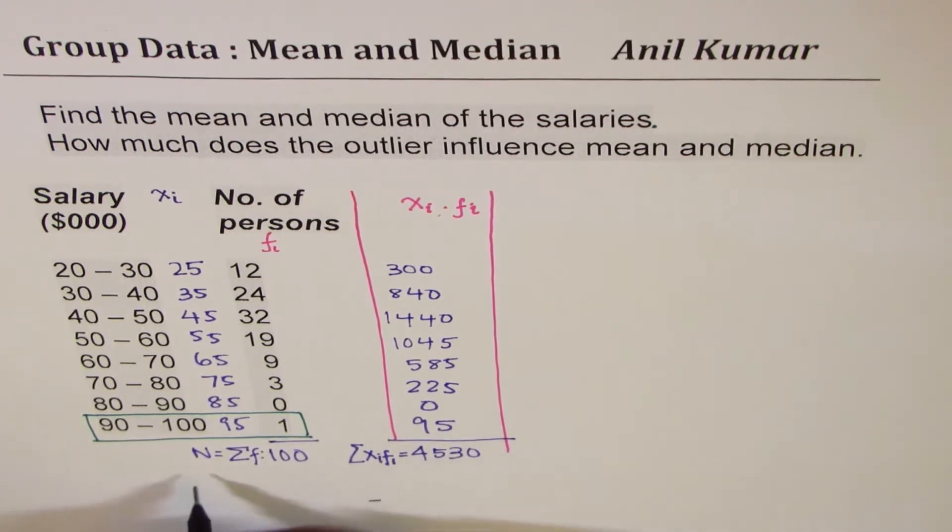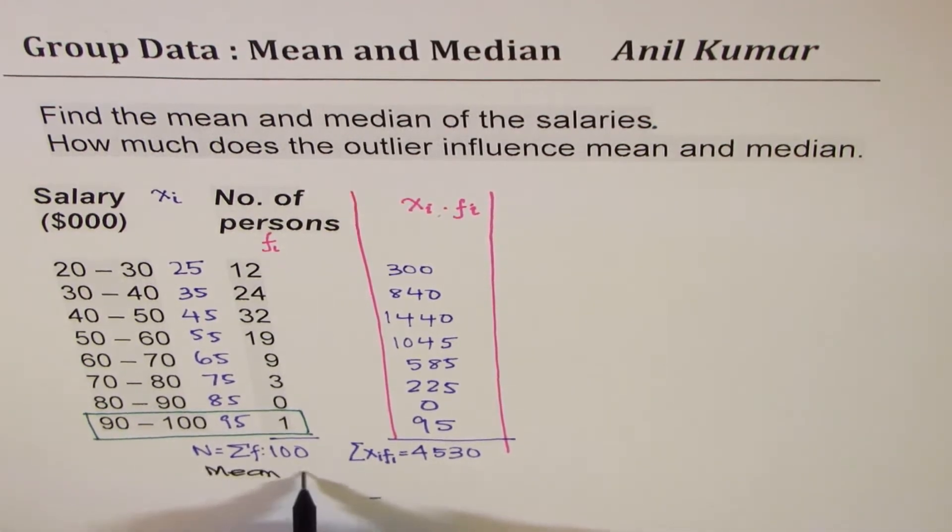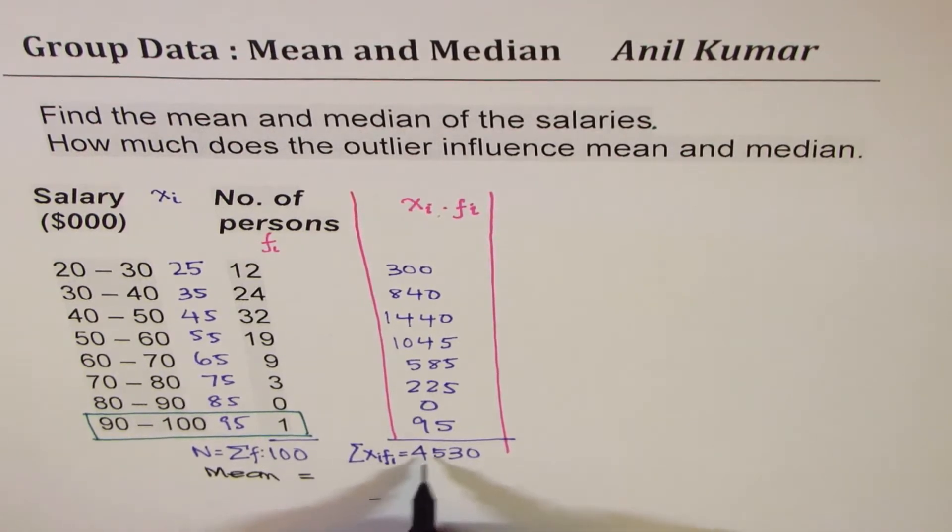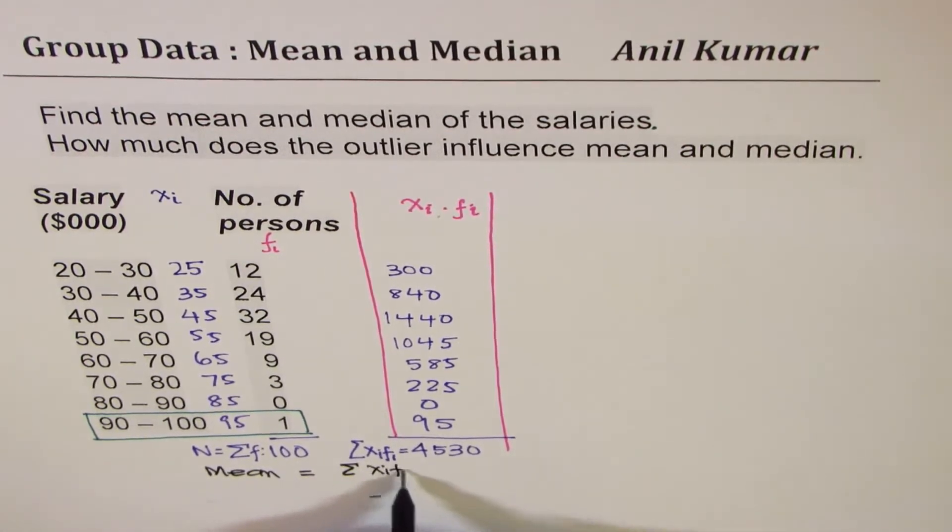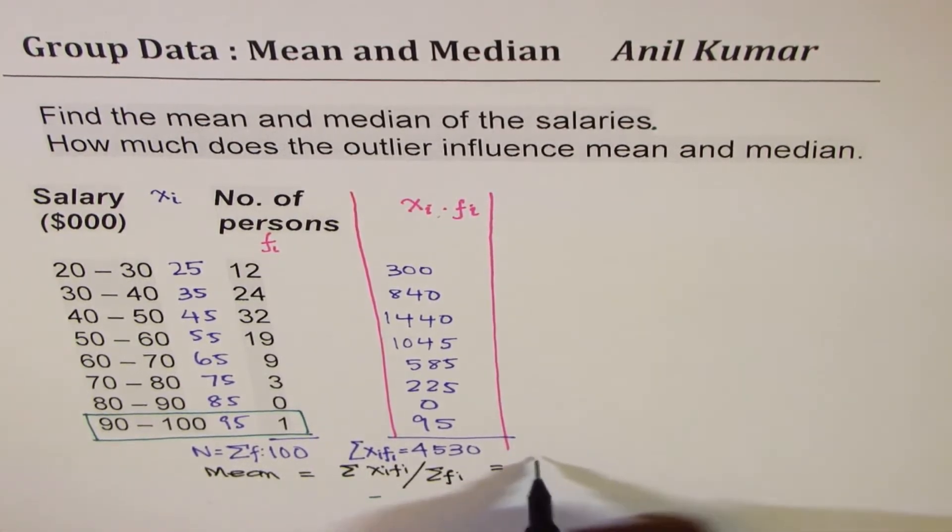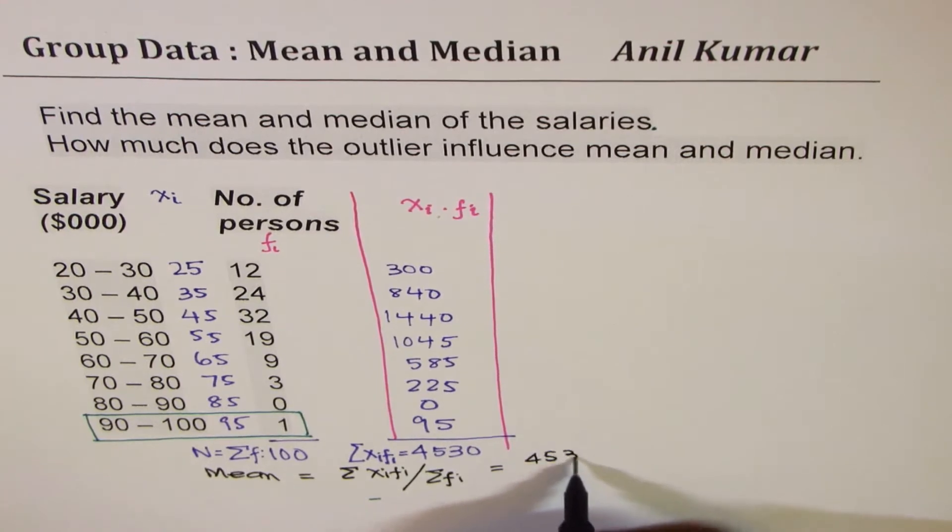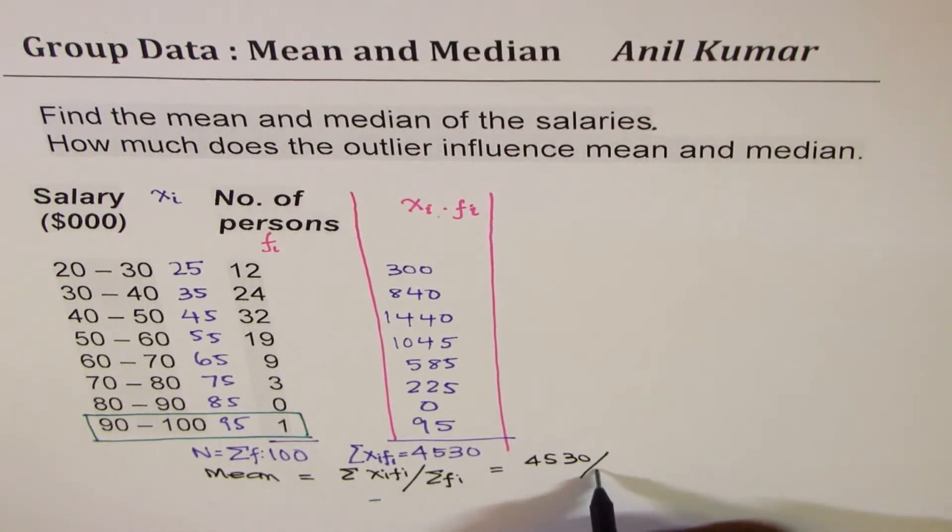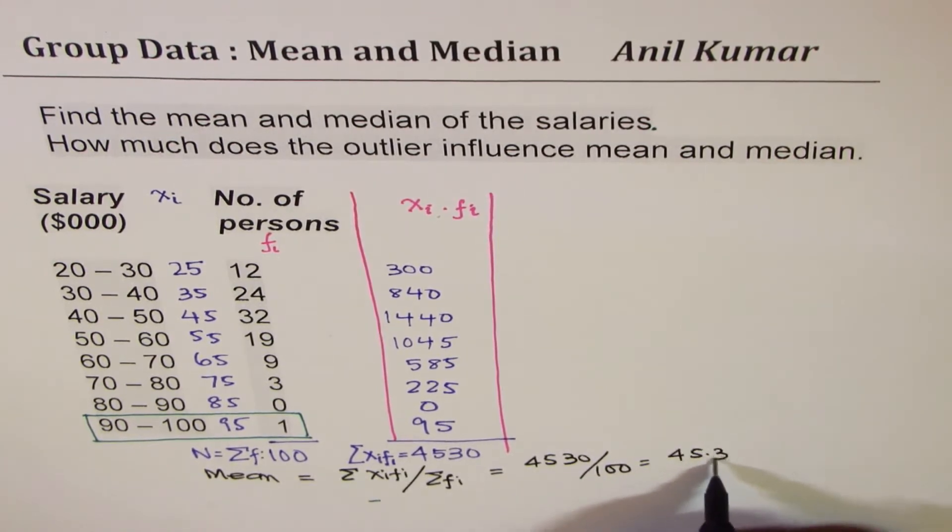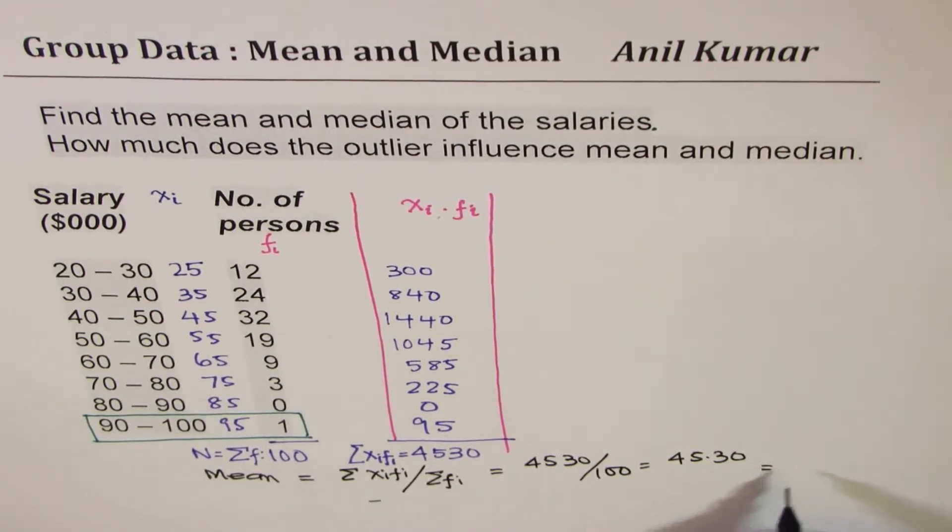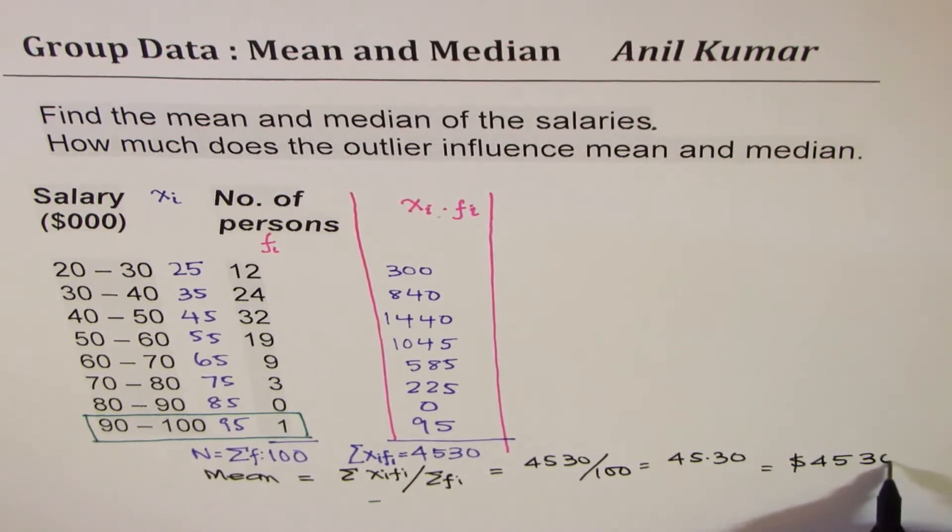We can write down what mean is. Mean is equal to the ratio of these two, the ratio of sum XIFI over sum FI, which is N. So which is 4530 divided by 100, and that gives you 45.30. Now in dollars, this is thousands of dollars, so we can write this as $45,300. So that is the mean for us.